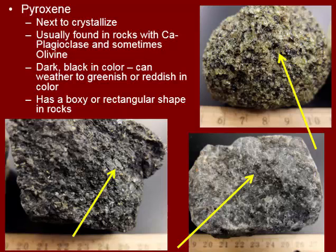The next would be pyroxene. This is the next to crystallize as that magma chamber gets cooler, and we see it a lot of times in the same rocks as olivine. Pyroxene is going to be more of a dark brown-black color and will have a boxy shape. The yellow arrows are pointing to crystals that are dark in color and kind of boxy in shape. Pyroxene forms with olivine, but we also see it with plagioclase feldspar, which is the next mineral we'll talk about.